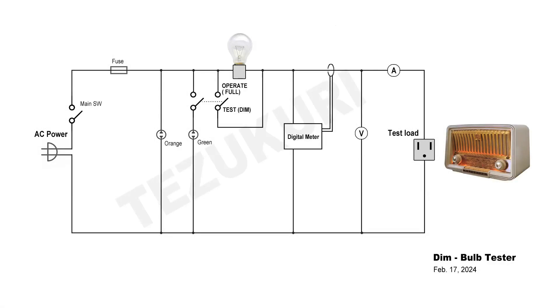This is a schematic diagram of the Dim Bulb Tester I made. The circuit is fairly simple and quite easy to make. As the diagram shows, the Dim Bulb Tester puts an incandescent light bulb between the AC power in the wall and the test load in order to provide a basic current limitation.